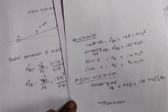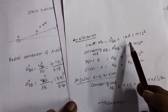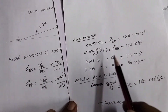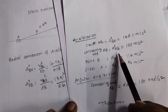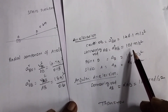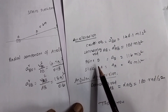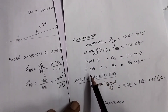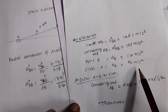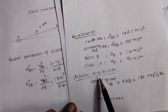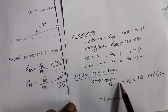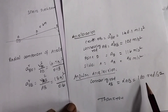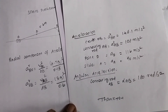Accelerations: acceleration of crank OB (AR_BO) = 148.1 m/s²; acceleration of connecting rod AB = 108 m/s²; acceleration of point D (AD) = 116 m/s²; acceleration of slider AA = 90 m/s²; angular acceleration of connecting rod AB (alpha_AB) = 180 rad/s². Thank you — please subscribe and like.